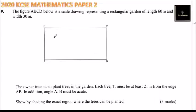The figure ABCD below is a scale drawing representing a rectangular garden of length 60 meters and width 30 meters. So we have our rectangle here ABCD.